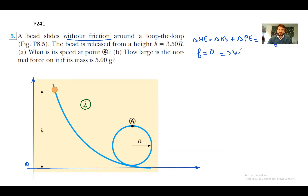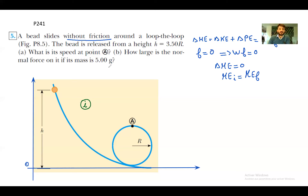Since omega_f equals zero, delta mechanical energy equals zero, meaning mechanical energy initial equals mechanical energy final. We can apply this to any position in the system. I need to calculate the speed of the object at position A. Since we have a circular trajectory, the speed is tangent to the trajectory. To calculate v, we apply ME_initial equals ME_final.